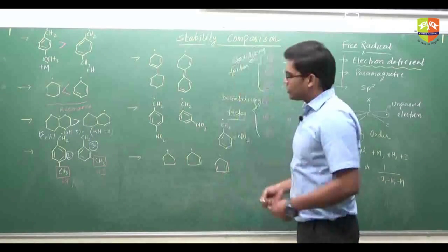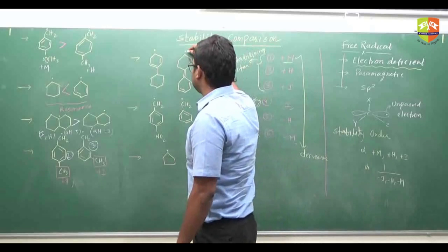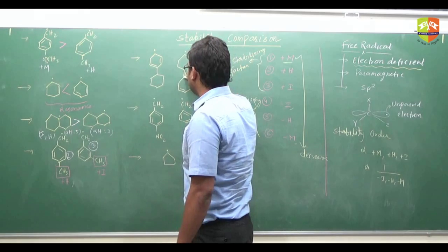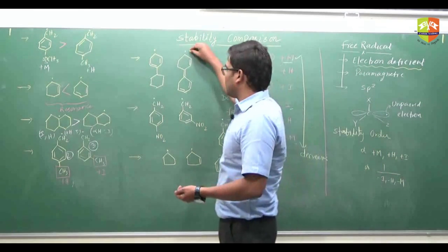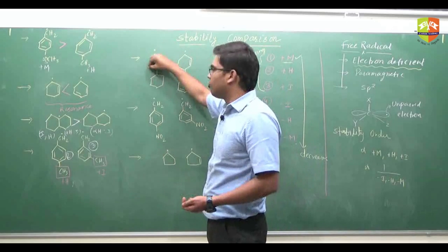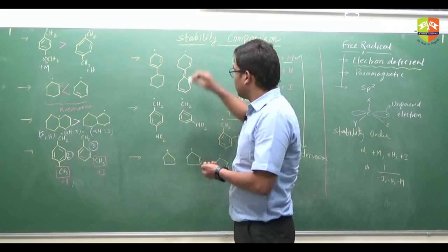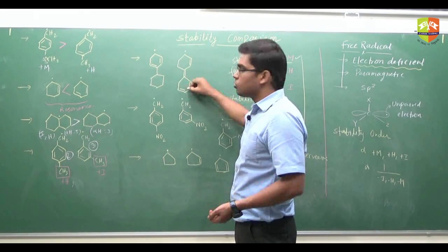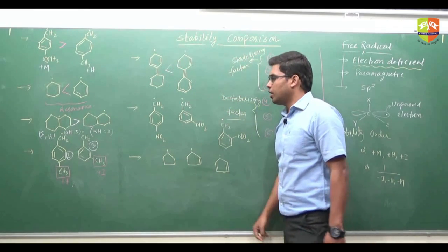Now for these three questions: this free radical has larger conjugation — 1, 2, 3, 4, 5, 6, 7, 8 carbon atoms. One free radical is in resonance with 1, 2, 3, 4 atoms, but another radical is in resonance with 1, 2, 3, 4, 5, 6, 7, 8 atoms. Larger conjugation means more stability.